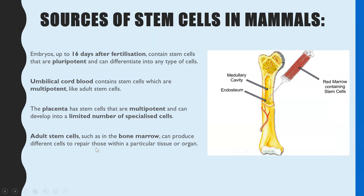In summary, the sources of some of these stem cells: embryos up to 16 days after fertilisation contain pluripotent stem cells, so a blastocyst will be able to provide those stem cells from about day four or five up to day 16. The umbilical cord also contains stem cells — sometimes people keep the blood from the umbilical cord to have a source of multipotent stem cells. Along with the placenta, that also has multipotent stem cells. Bone marrow is also a source of multipotent stem cells.